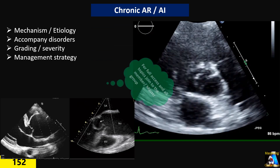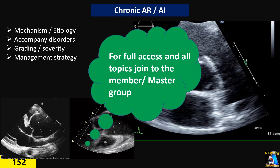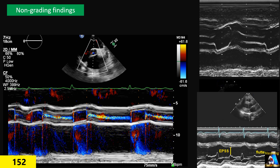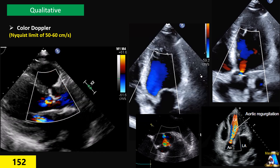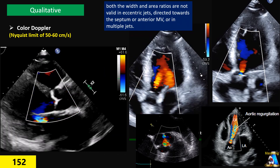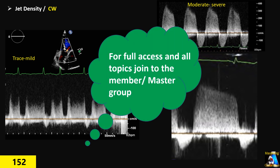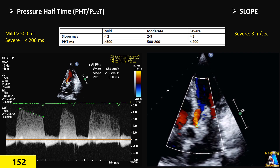Topics include how to evaluate acute and chronic aortic regurgitation, the grading system, non-grading findings, qualitative evaluation and grading, jet density and continuous wave Doppler concepts, and pressure half-time and slope.